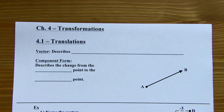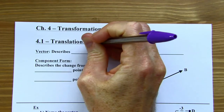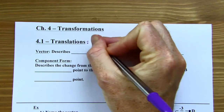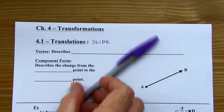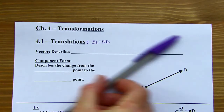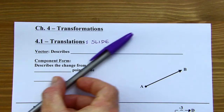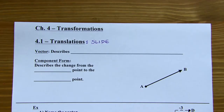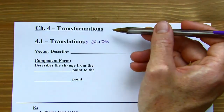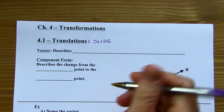First off, this section is called translations. A translation is basically sliding something — it could be a point, a line, a rectangle, a triangle, or any kind of figure. So this pen: I can translate this pen. I can move it left and right, up and down, or on a diagonal — a combination of left, right, up, and down. Just sliding it around is a translation in essence. It's a particular type of transformation. The whole chapter is about different types of transformations, split into different sections, and this is our first kind.